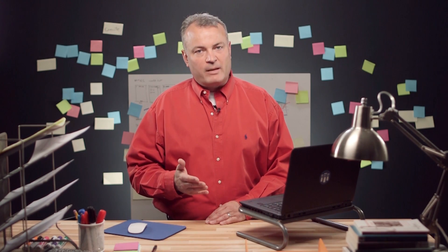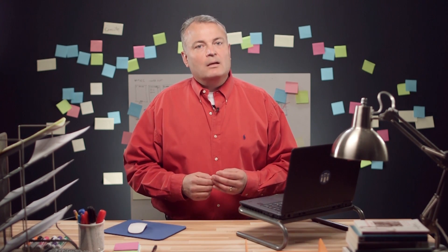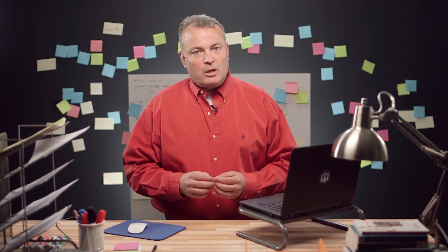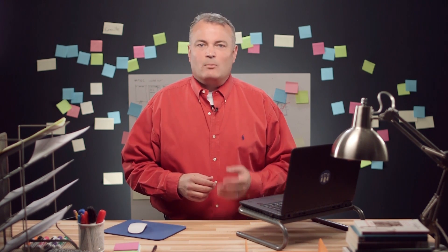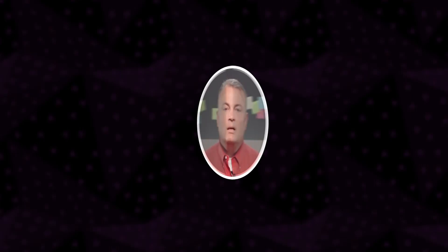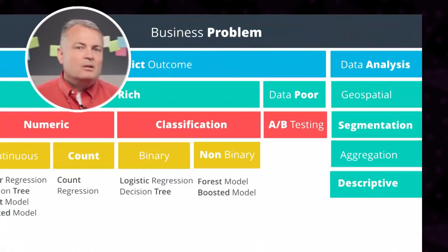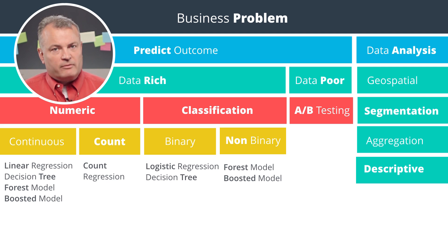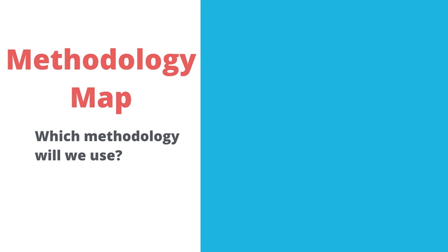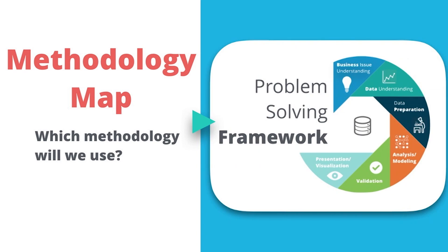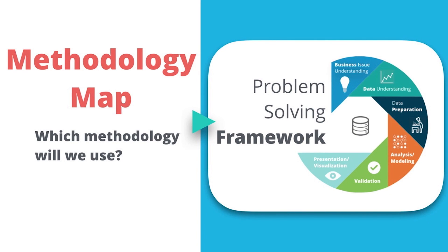The Analytical Problem Solving Framework that we just outlined will help us systematically work our way through a business problem. However, it doesn't help us understand which methodology to use. To determine the methodology, we're going to reference the following flowchart, which we'll refer to as the Methodology Map. The Methodology Map will help us decide which approach to use for our business problem and is meant to be used as we work through the Analytical Problem Solving Framework provided in the previous lesson.